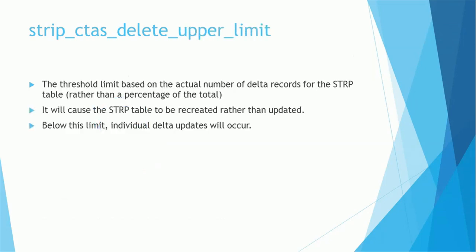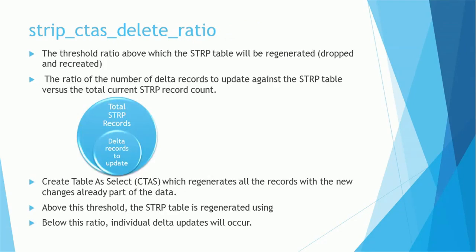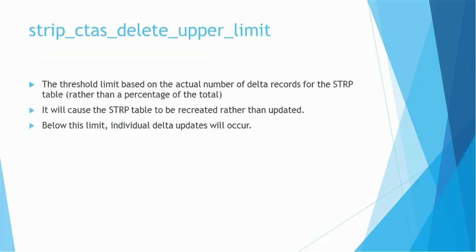Strip_ctas_delete_upper_limit is the actual count — not a percentage. For example, if set to 40,000, and you get fewer than 40,000 records to update, only individual updates happen. If you get more than 40,000, the whole strip table is recreated. This is the threshold limit based on the actual number of delta data records rather than a percentage of total. If this limit is exceeded, the strip table is recreated rather than updated; below this limit, individual delta updates occur.